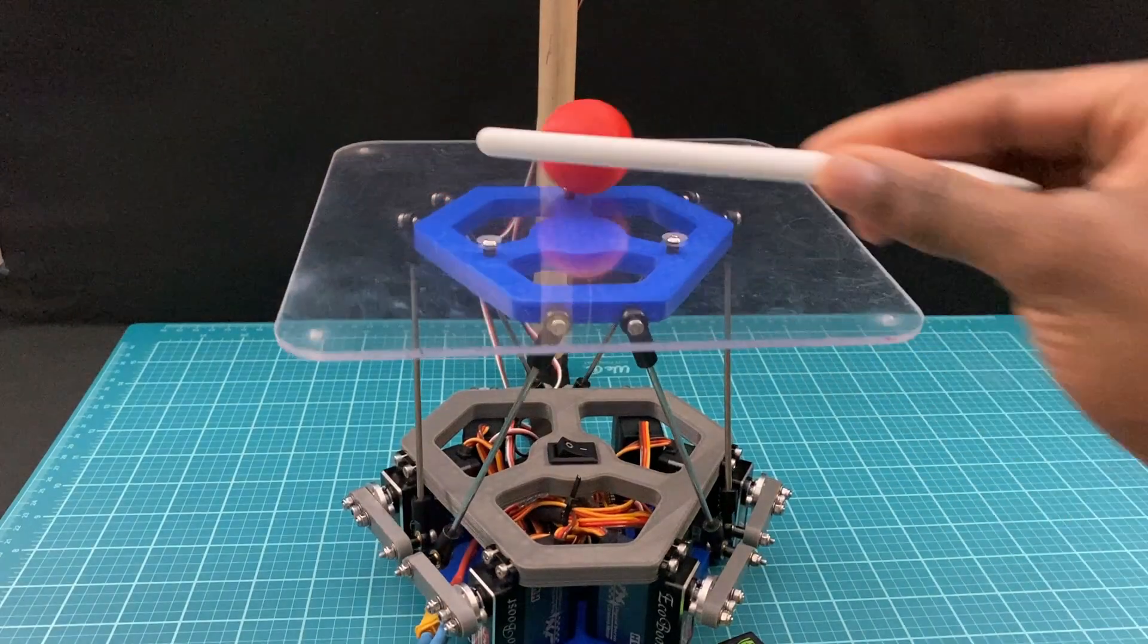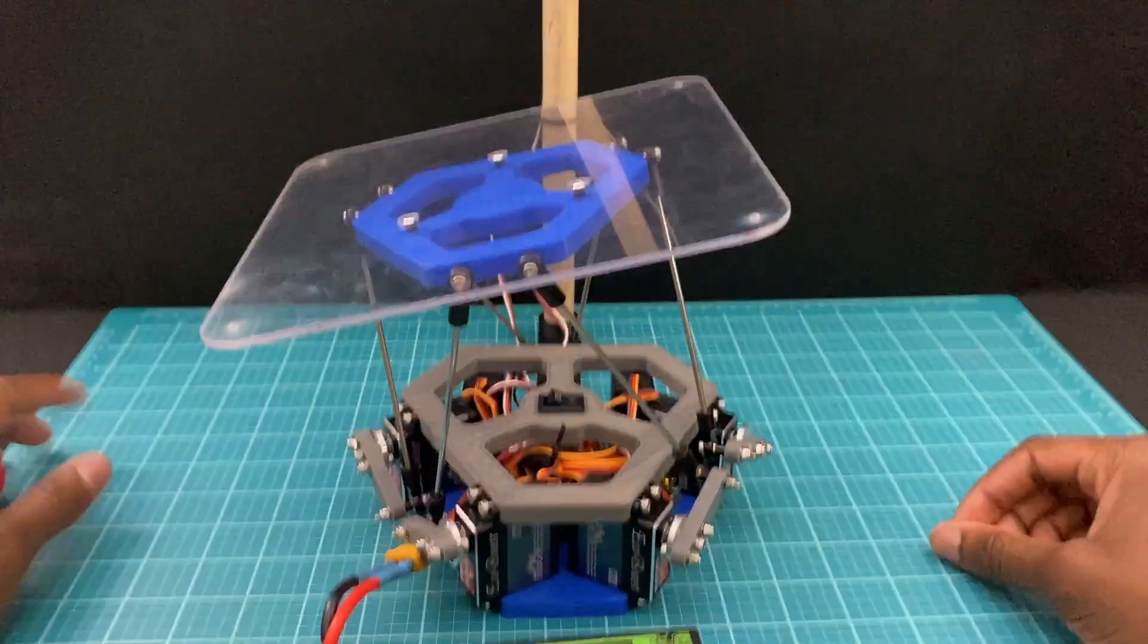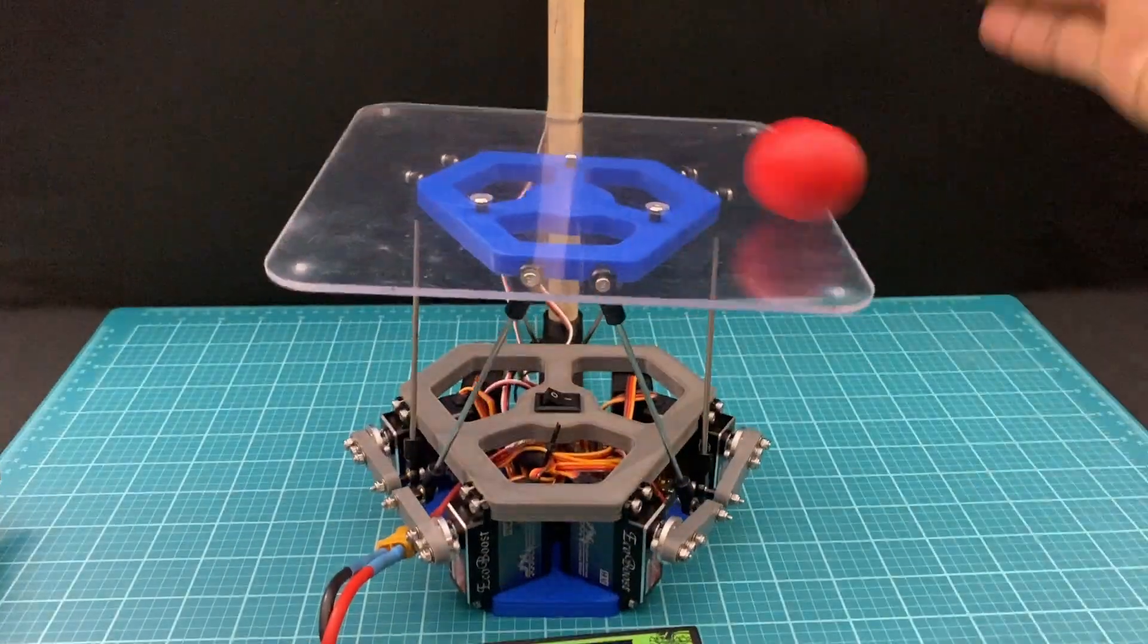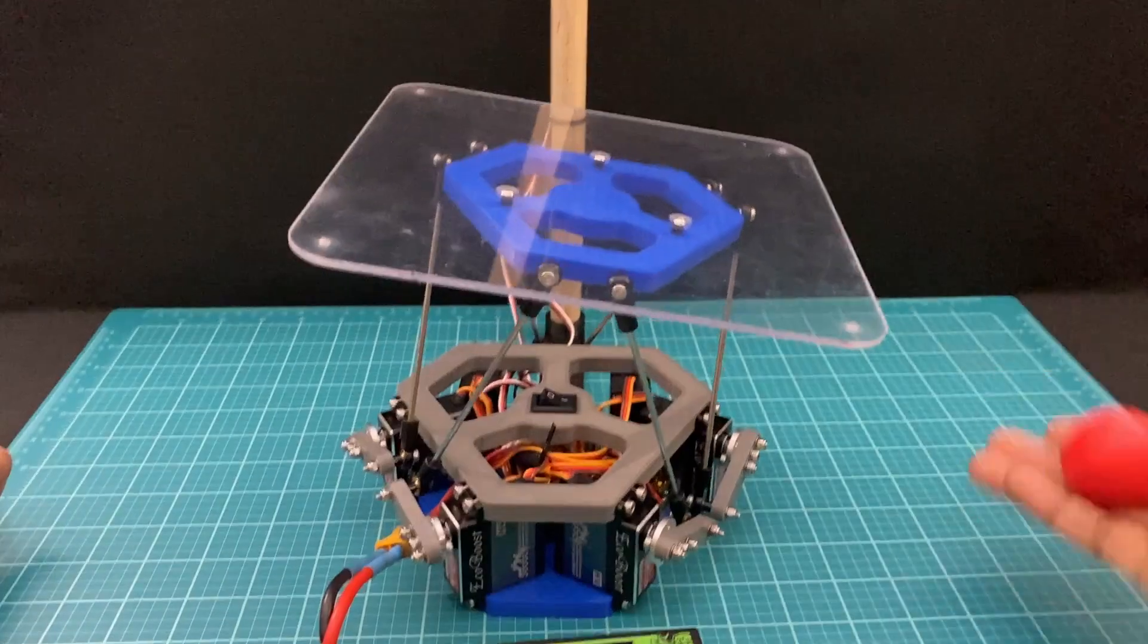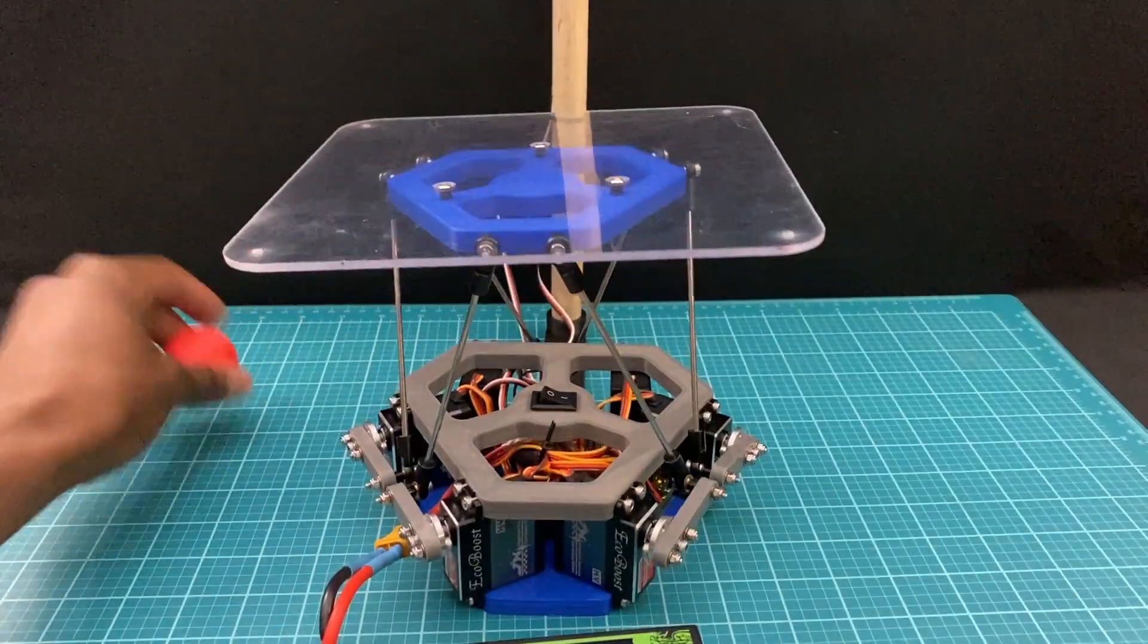The robot also has a couple of cool features that I discovered during the build. If you reverse the PID outputs, instead of finding the fastest and most effective way to keep the ball on the platform, the robot instead finds the fastest and most effective way to throw the ball off of the platform.